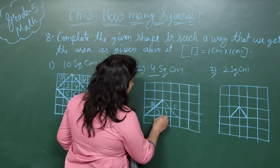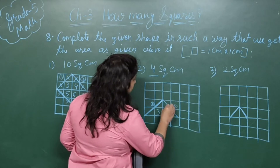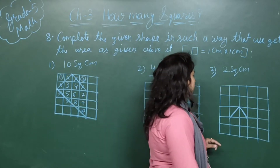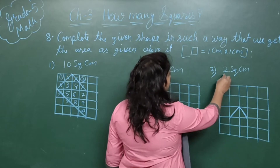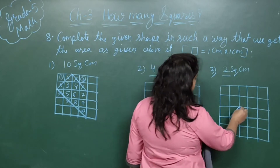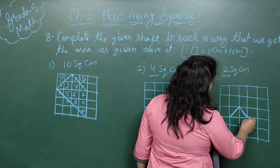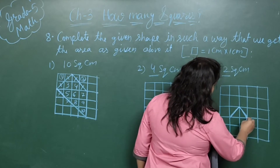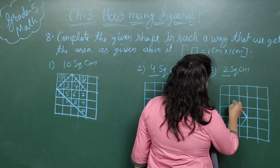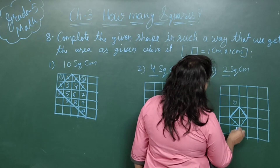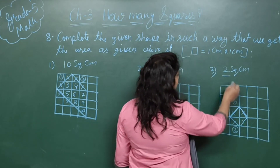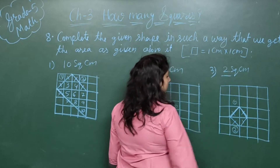You can make a triangle on that square sheet. For the third shape, the area is 2 square centimeters. It is given as half and half, so we complete it: half and half make 1, and half and half make another 1, giving 2. The area will be 2 square centimeters.